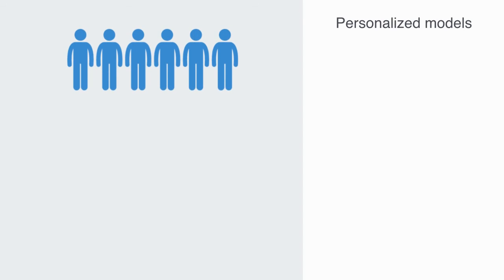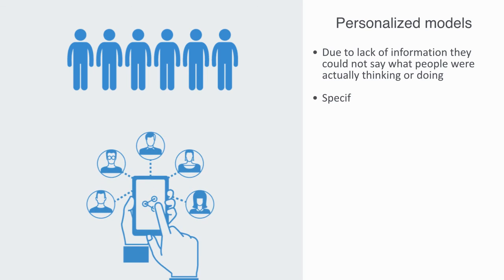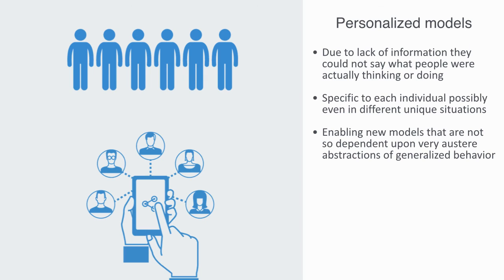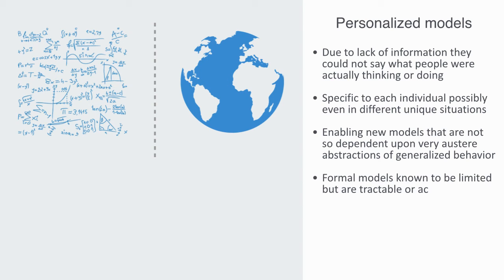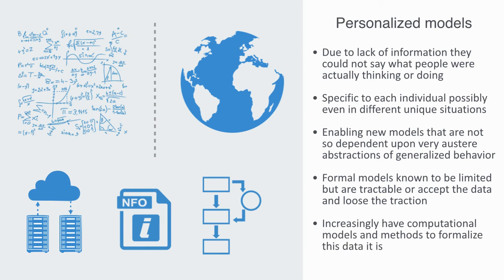Traditional models dealt with very generalized aggregations. Due to lack of information, they could not say what people were actually thinking or doing. With the availability of a mass of new data sources from social networking and the internet, we can get much more personalized models, specific to different individuals and even in different unique situations. Again, enabling new models that are not so dependent upon very austere abstractions of generalized behavior. Part of the problem today is that very few people understand the non-linear computational methods that are required to support this new approach. And thus people stay coming back to this either-or situation, where either we use formal methods that are known to be limited but are tractable, or accept the data and lose the traction. When in fact, we increasingly have the computational models and methods to formalize this data. It's just very much under development as of yet.